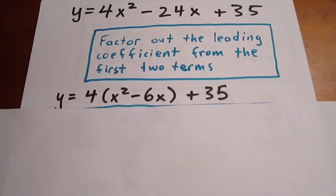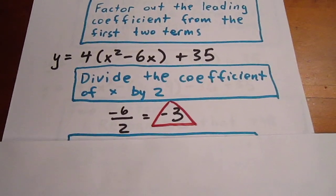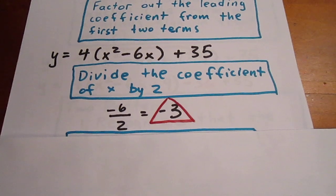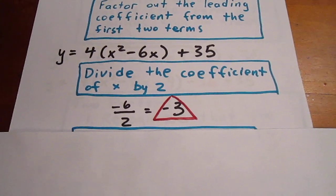We have x²-6x in the bracket. Next thing we do is divide that coefficient of x by 2, and so that value will be -3. I put it in a red triangle, and we'll get back to that value later.